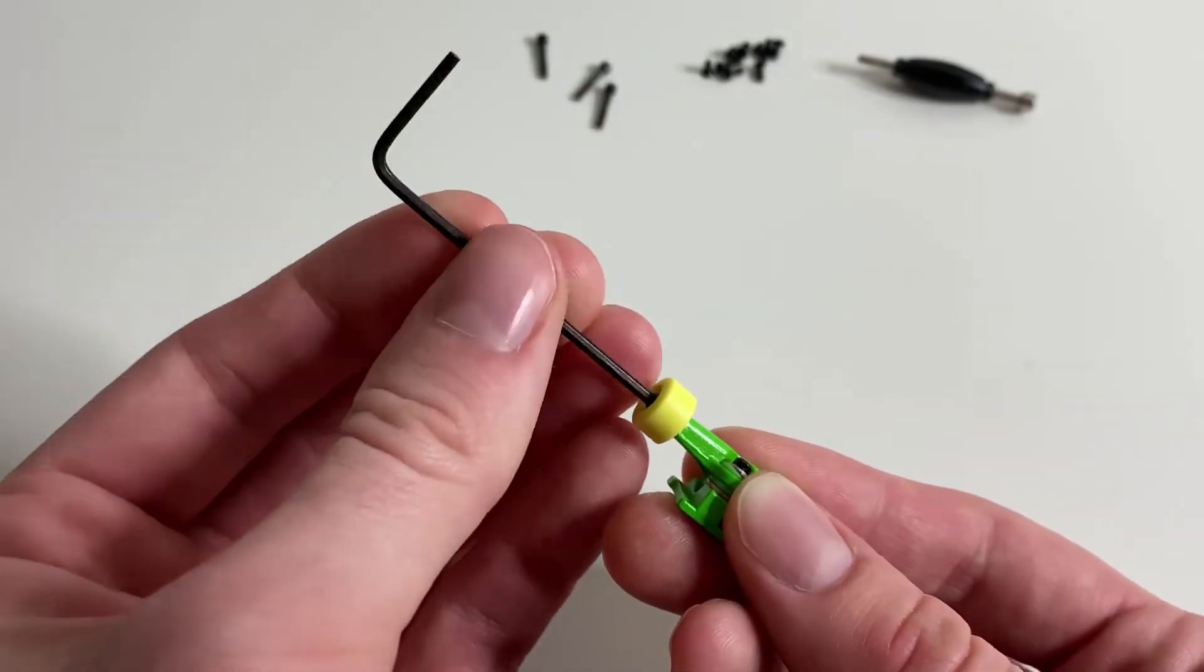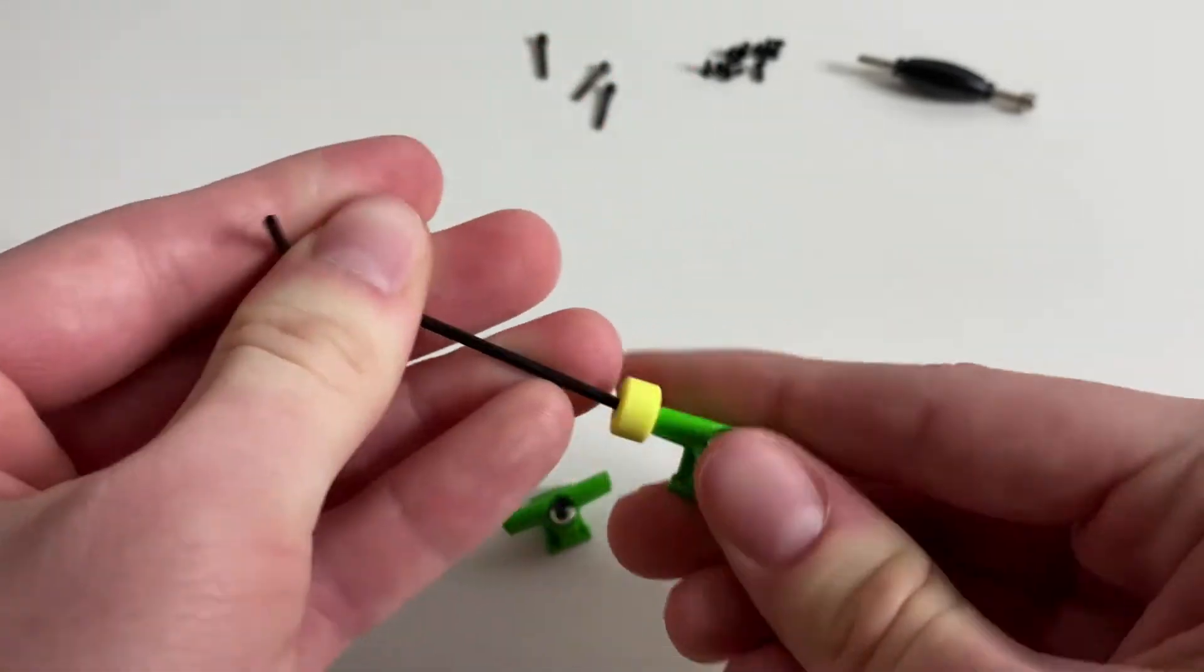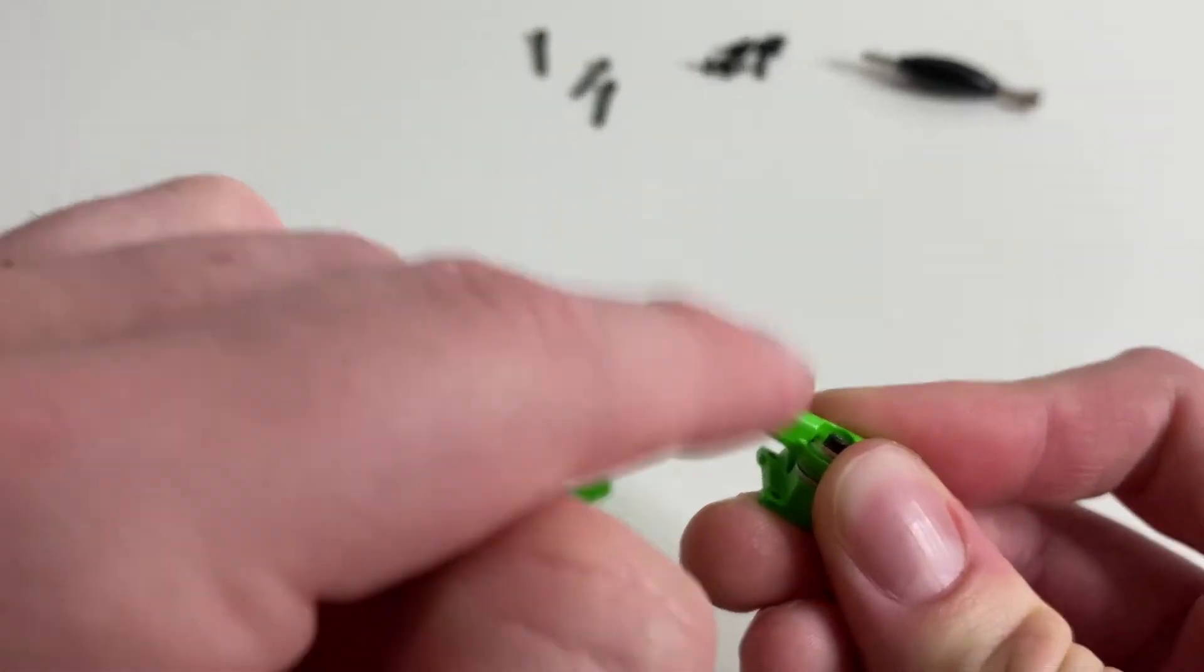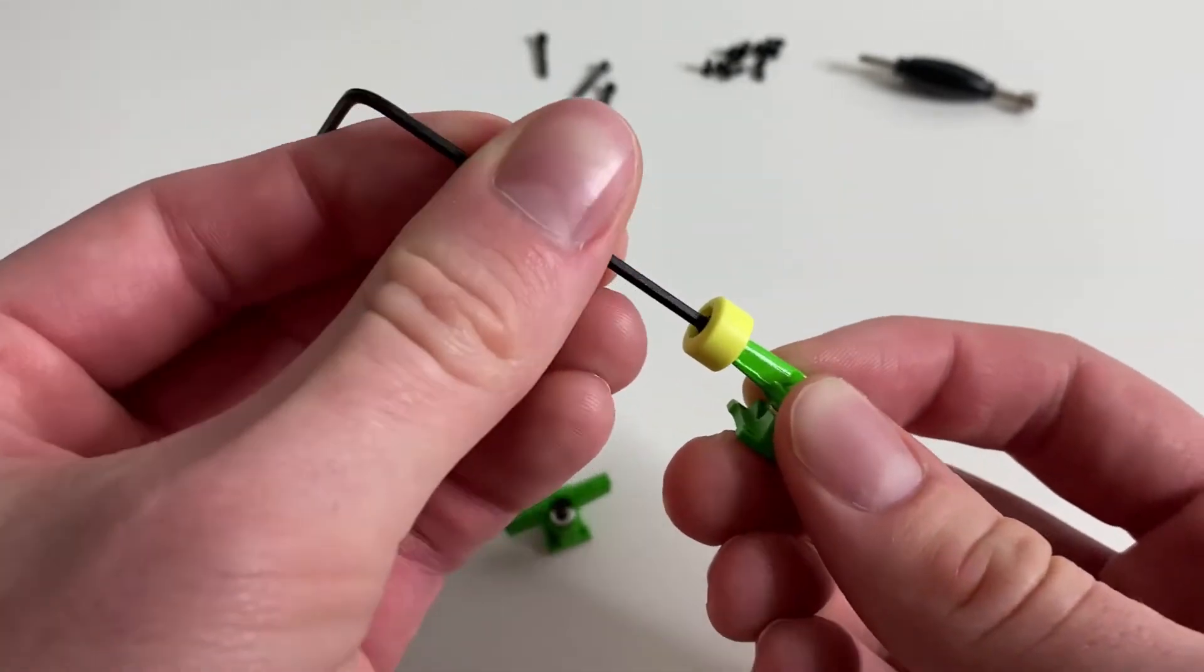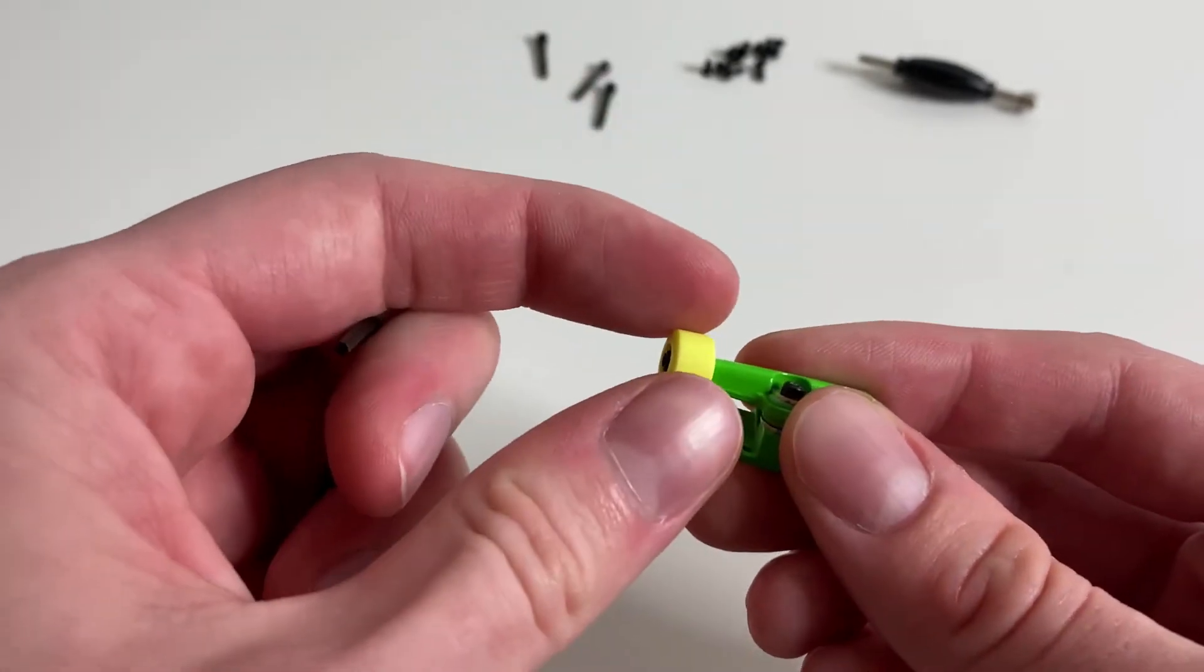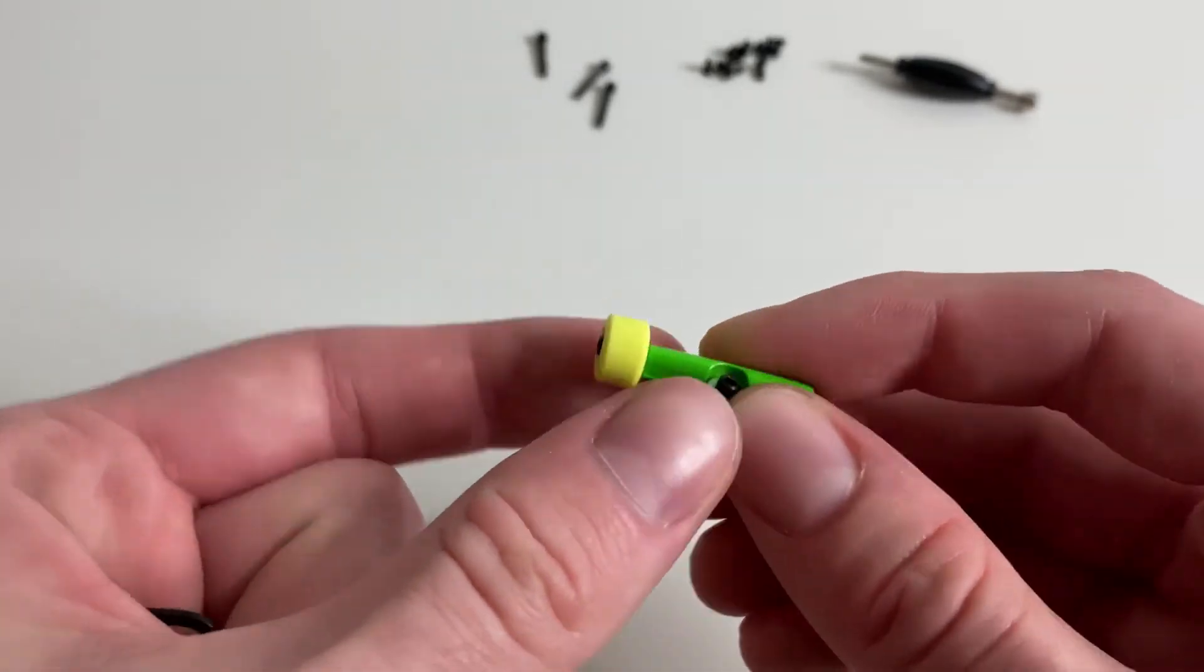And screw it in with the Allen key kingpin. You don't want to do it too tight because your wheel is not going to move, but you also don't want to do it too loose, otherwise the wheel is going to move around too much. You want to get it just right where the wheel is going to spin nicely.